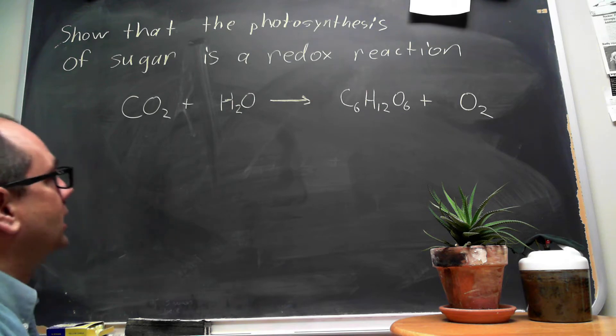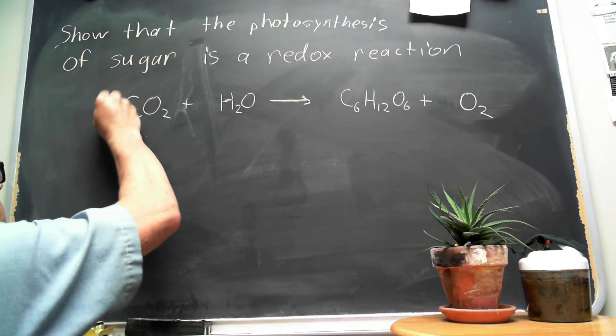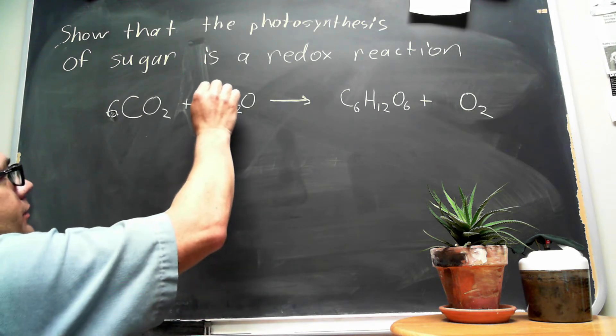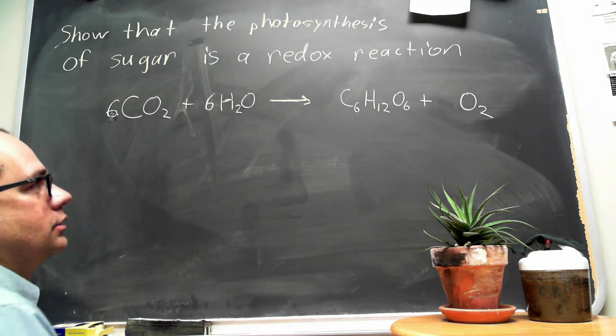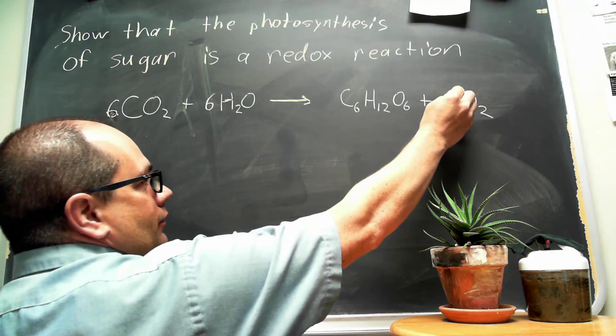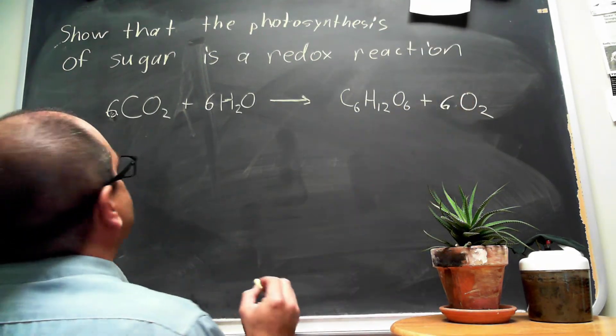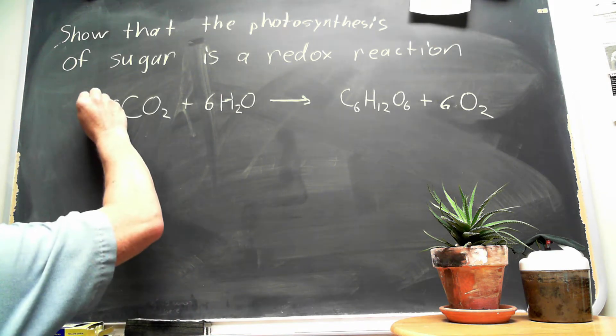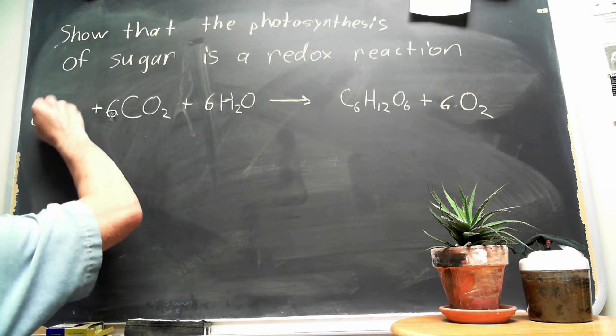To balance this reaction, we take six carbon dioxides and react it with six waters to produce one sugar molecule and six oxygens. Now, this is a non-spontaneous reaction. Energy comes in in the form of light.